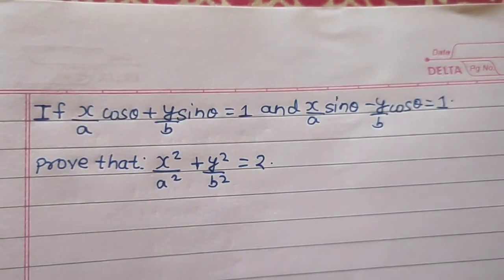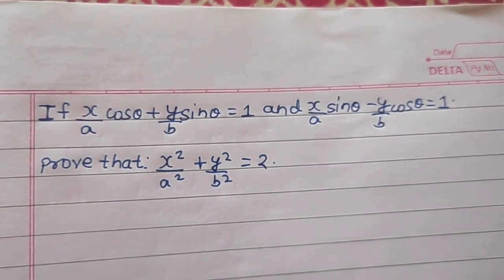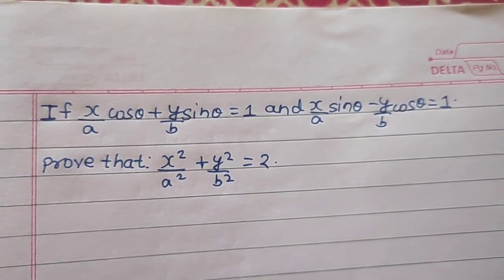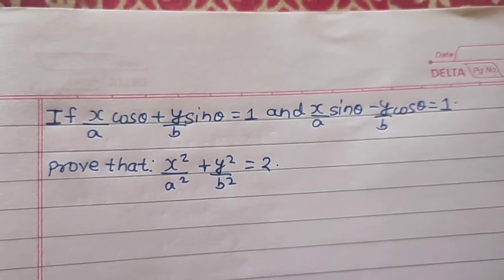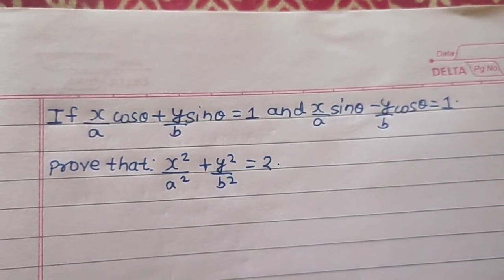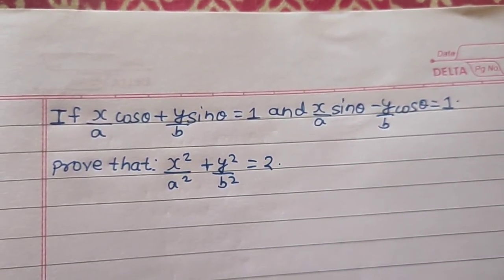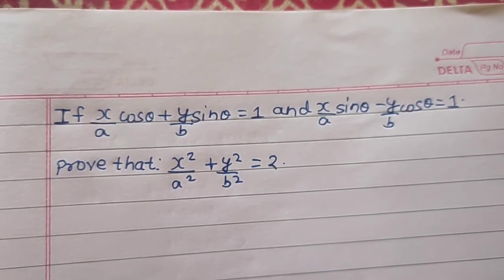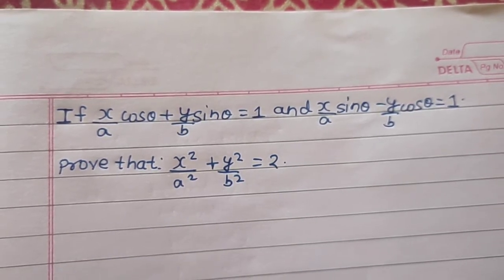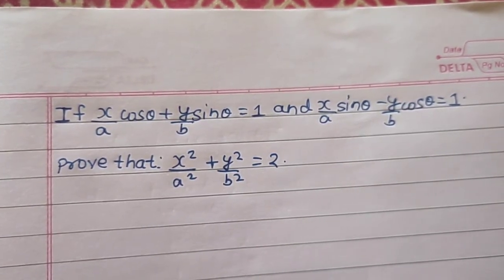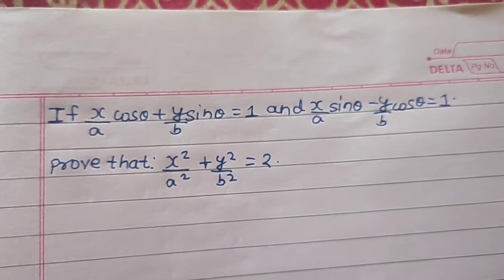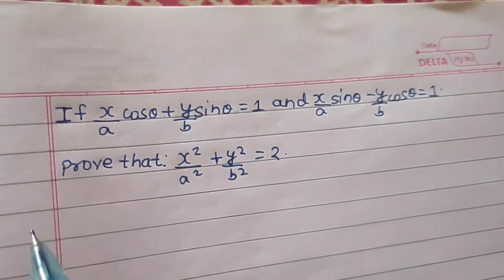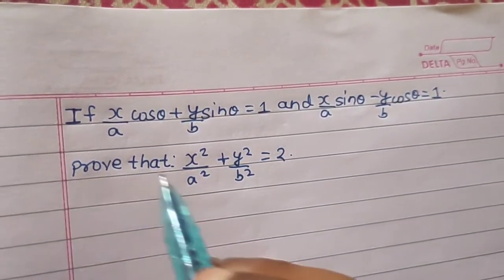If x/a·cosθ + y/b·sinθ = 1 and x/a·sinθ − y/b·cosθ = 1, we need to prove that x²/a² + y²/b² = 2. Let's start the proceedings.